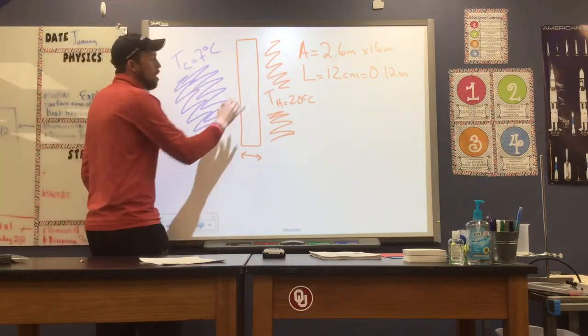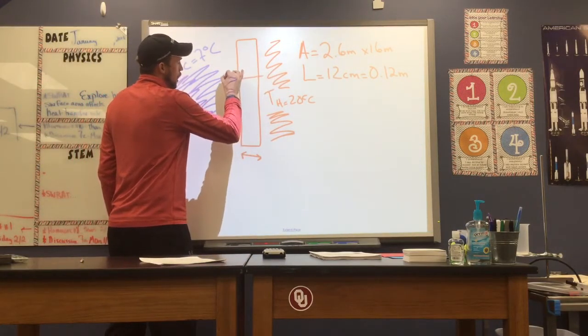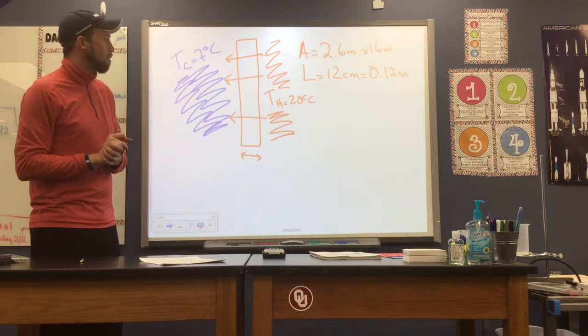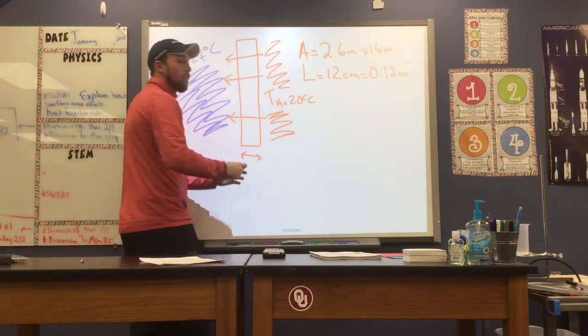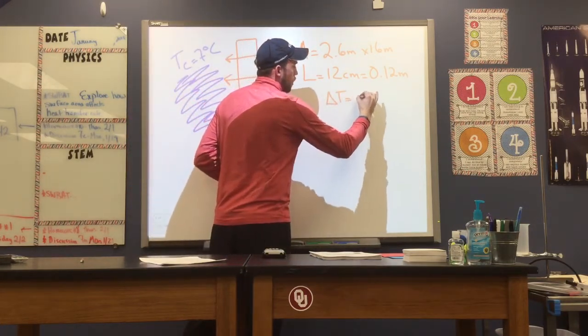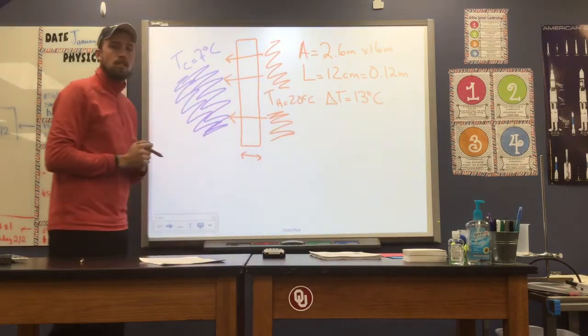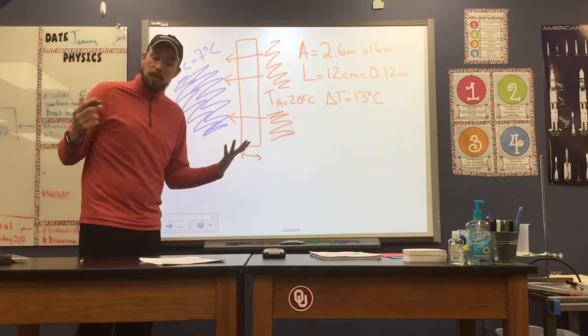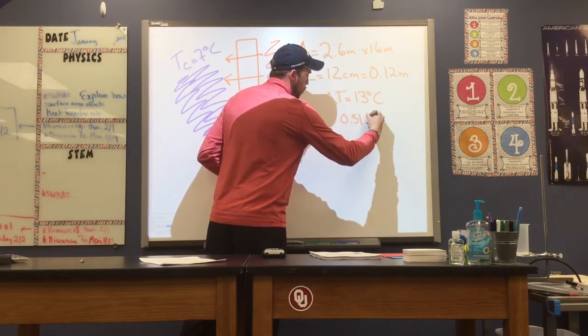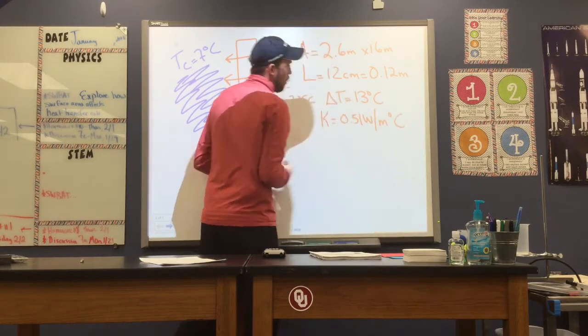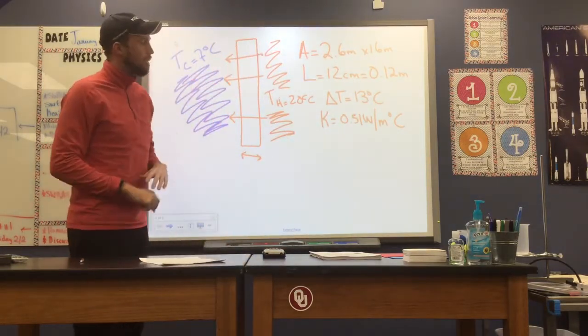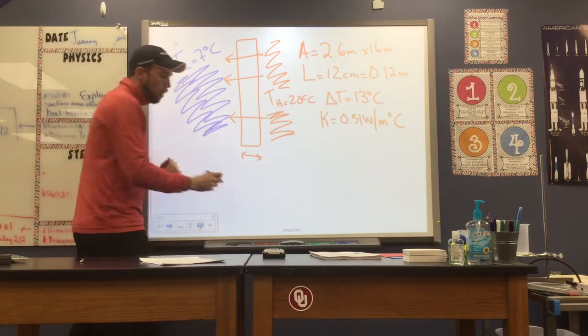We've talked about heat wants to move from hot to cold. So heat wants to move through our brick wall. And we want to see how much heat is passing in a given amount of time. Now we will also need our temperature difference, what we call delta T. So 20 degrees and 7 degrees. Our difference between those two numbers is 13 degrees Celsius. And we're also told that our material, this brick, has a thermal conductivity of 0.51. So K is 0.51 watts per meter degree Celsius. Because of the units for our thermal conductivity, we need to make sure we're in meters and degrees Celsius and our other variables.